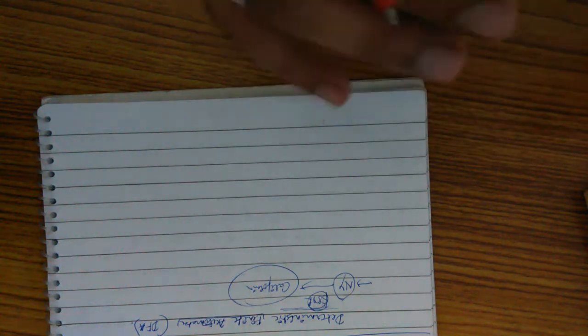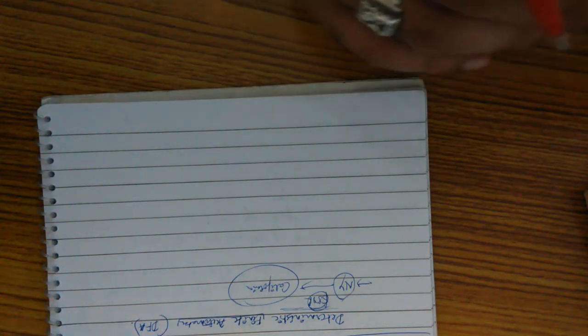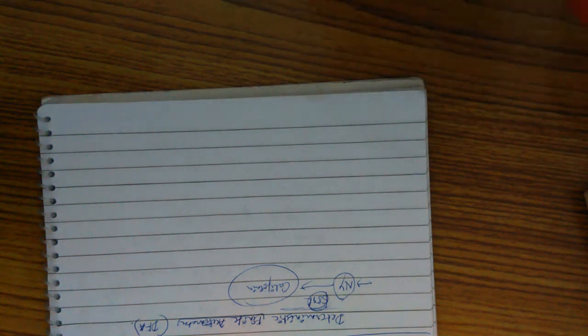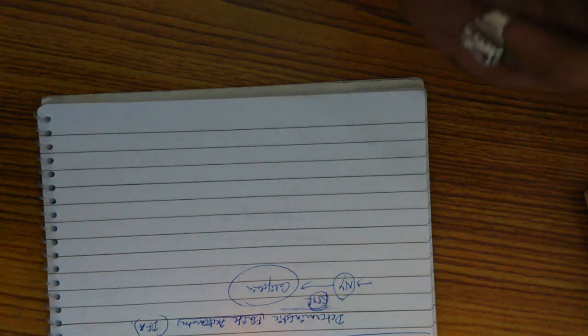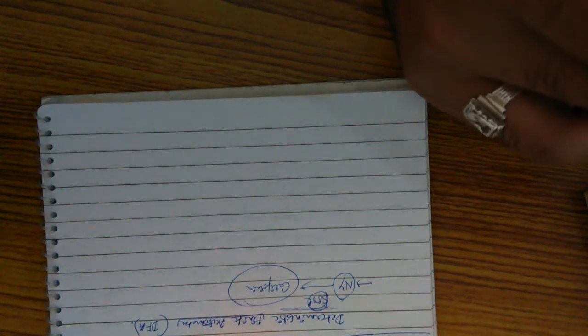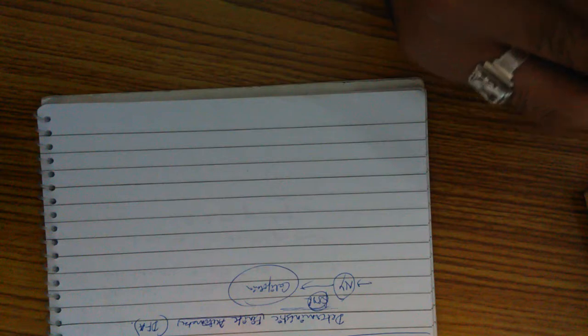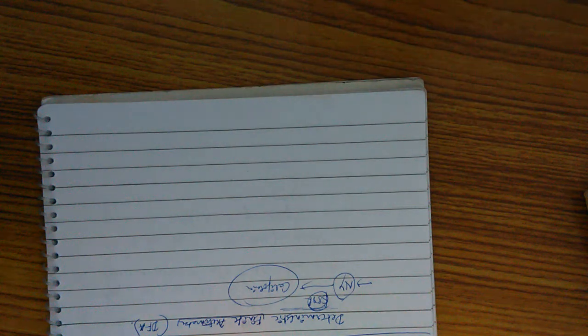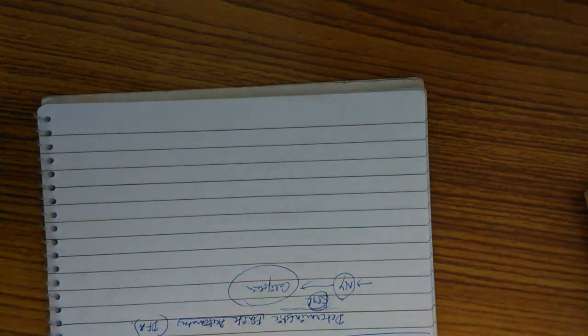So this is finite automata, and this is deterministic finite automata. It reaches a final state with a given input. That actually defines a deterministic finite automata.